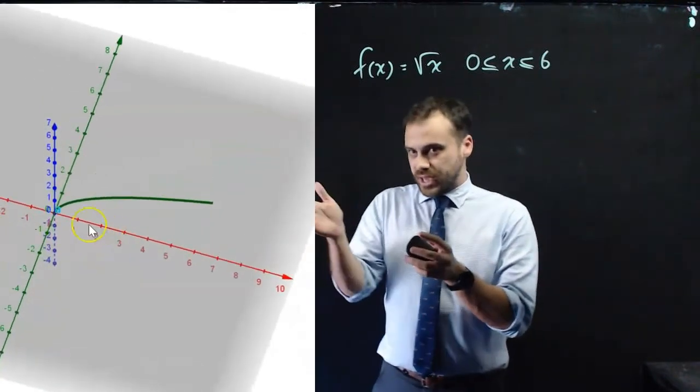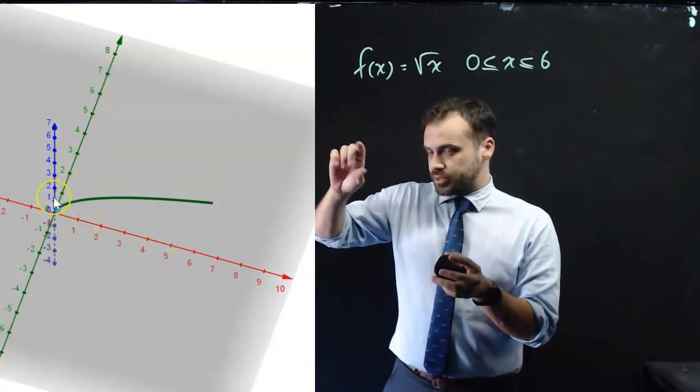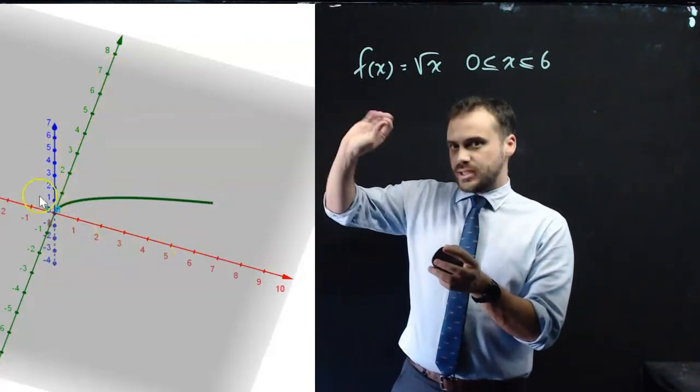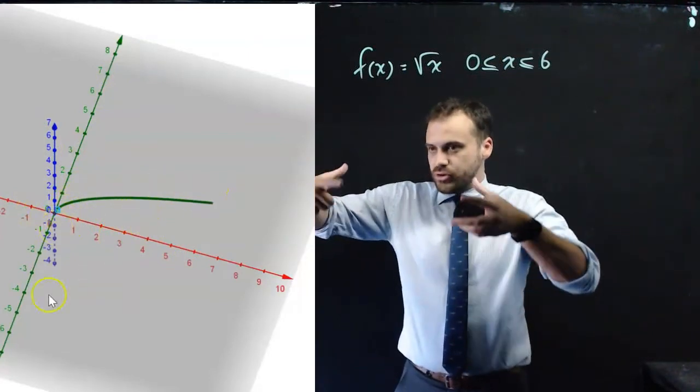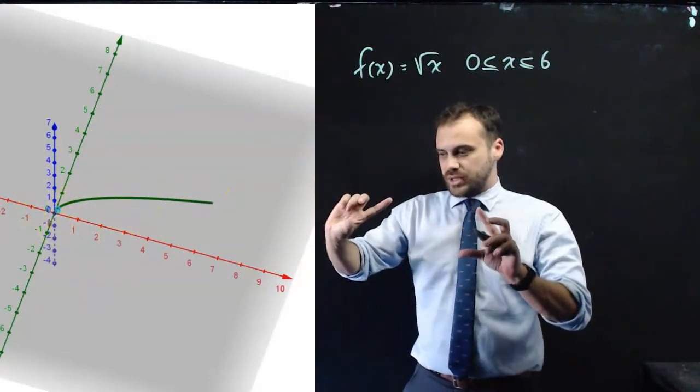Alright, so now we have an x-axis there, a y-axis there, and that blue axis is the z-axis. Okay, now we can take our function and rotate it around the x-axis.